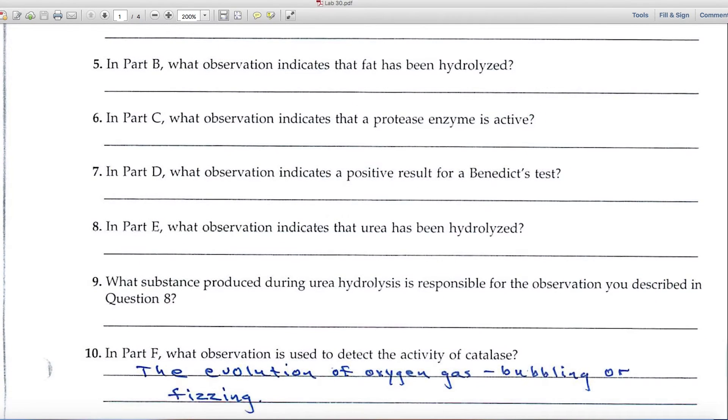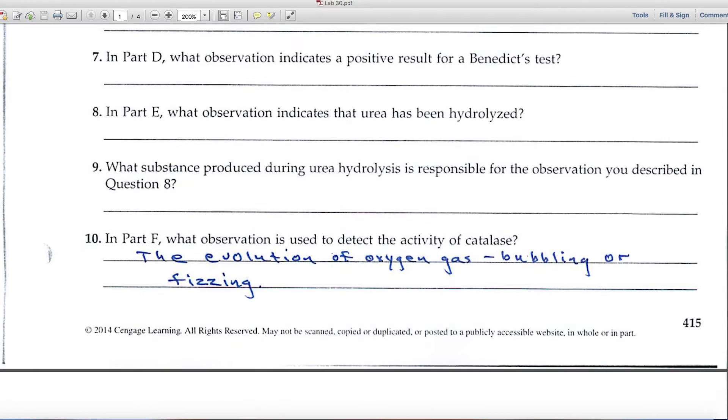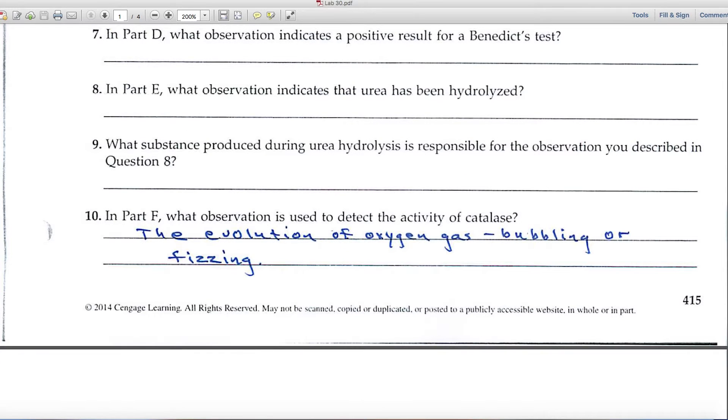None of these are too difficult. Number 10 says what observation is used to detect the activity of catalase? Well, the answer is the evolution of oxygen gas, that means you'll see a bubbling or fizzing.